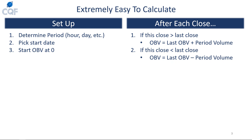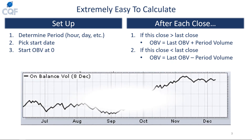If the close is lower than the last close — meaning the price went down — then you subtract the period's volume from the last OBV. It is that simple. You take the on balance volume from the previous day and either add or subtract the current period's volume based on whether the price went up or down. You can then plot it as a simple line. The actual values don't matter as much; you're looking at trends.